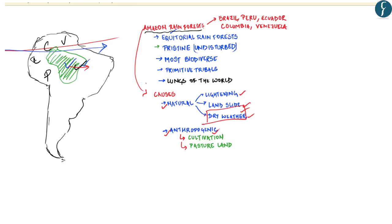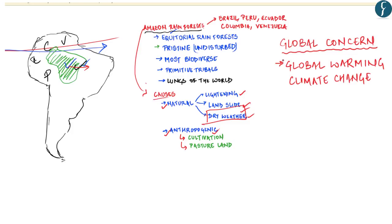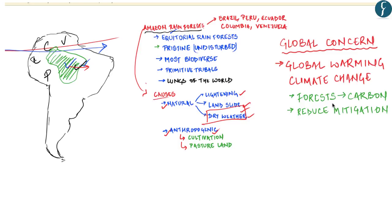The global community is concerned because of the multidimensional impact of these fires. First, regarding contribution to global warming and climate change: forests are great carbon sinks, reducing carbon dioxide through photosynthesis while producing oxygen. Constantly removing the world's most densely forested areas significantly reduces Earth's capacity to remove CO₂ from the atmosphere, severely denting climate change mitigation efforts. Burning forests also directly contribute carbon to the atmosphere, accelerating global warming.